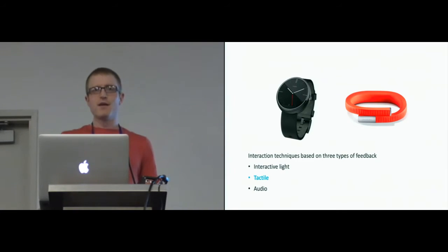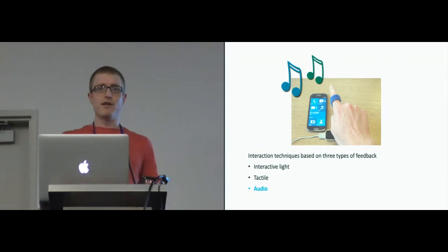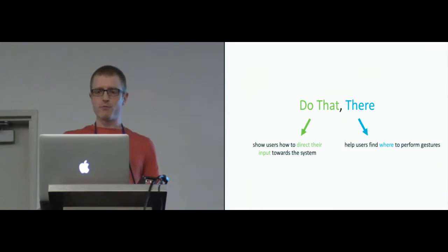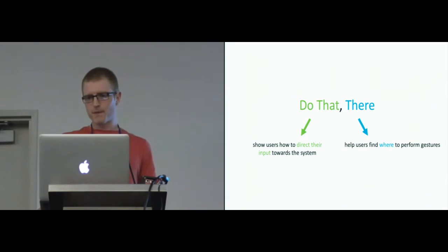We also considered tactile feedback. Tactile feedback during mid-air gestures can be challenging because the user doesn't actually contact the device. So we use vibro-tactile feedback from wearable devices like smart watches or activity trackers, which we could use to provide information during interactions. We also used audio feedback, because it's an easy output modality to provide in terms of technical challenges. We developed an interaction technique called Do That There, which can overcome some of the usability problems I spoke about earlier, using these three types of output. This interaction has two parts: Do That, which tells users how to direct their input towards the system, and There, which helps them find where to perform gestures. I'll now talk about each part separately, starting with There, and then bring them both together.